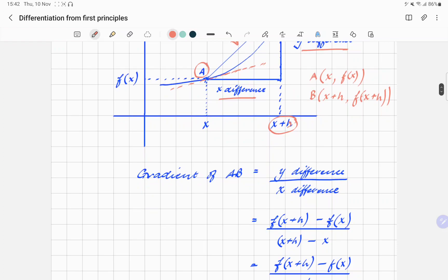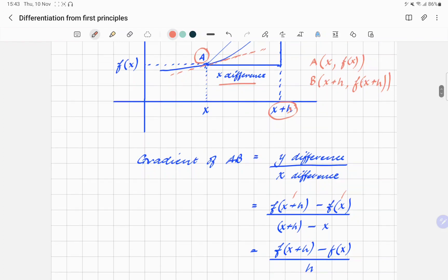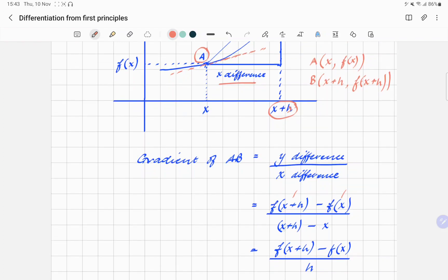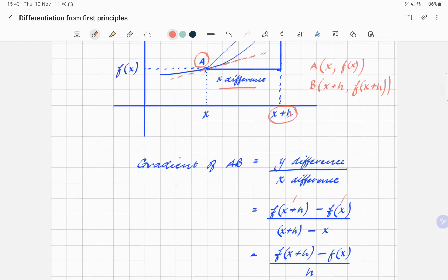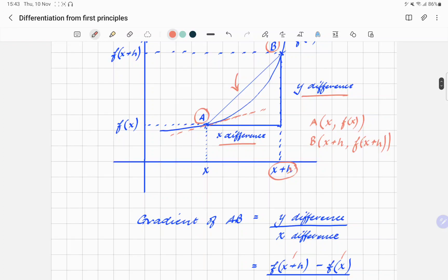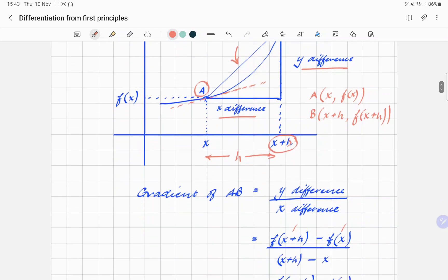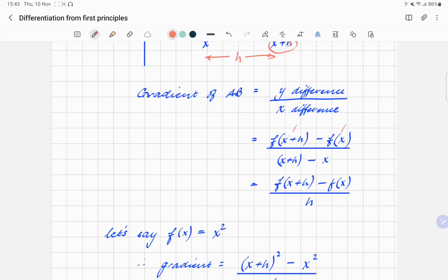Now using the coordinates, you've got the y coordinate of b there and the y coordinate of a there. And then you have the x coordinates of b and a respectively. Now the important thing is that the x difference that we're using, we are choosing to call it h. That's the increment from x to x plus h. So when we've worked all that out, what you end up with is this formula here - the difference in y between the two points over the difference in x between the two points, which turns out to be just h.